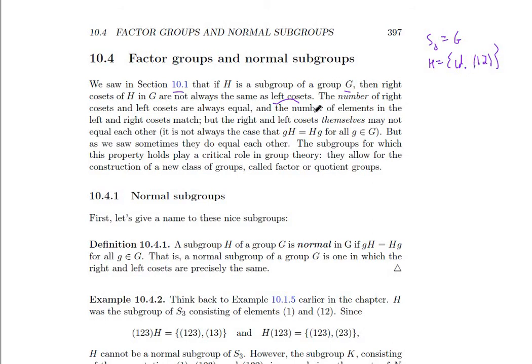But sometimes they do match, even for non-abelian groups. Sometimes it's true for all cosets that GH equals HG. And subgroups that satisfy this property play a critical role in group theory, and they allow for construction of new classes of groups called factor or quotient groups. Basically, if you have a subgroup that has this property, you can divide the big group by this small group and get another group.